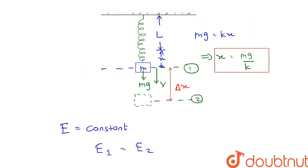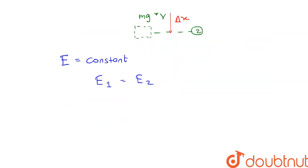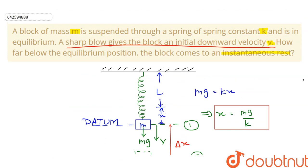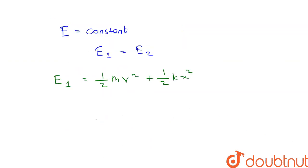Let's assume section 1 as a datum. This means potential energy at section 1 is 0. So E1 will be equal to the kinetic energy of the block, which is half mv squared plus the potential energy stored in the spring, which is half k x squared. This is the energy at section 1.